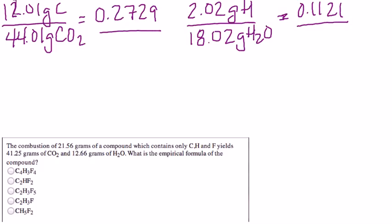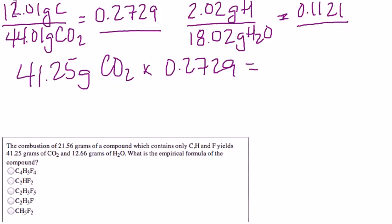So now we can take those percentages and multiply them times the mass of carbon dioxide and the mass of water. So 41.25 grams of CO2 times 0.2729 gives us 11.257 grams of carbon.